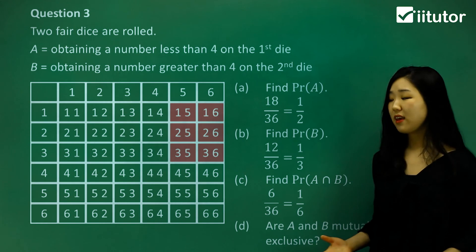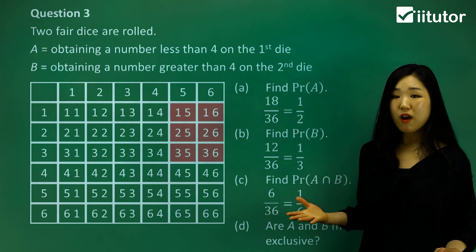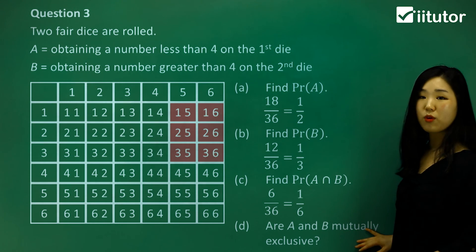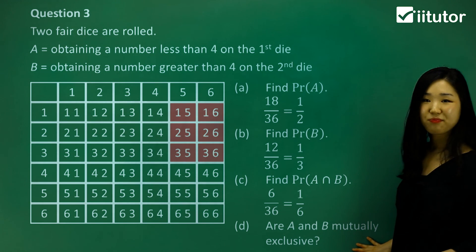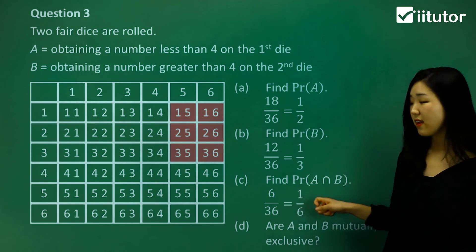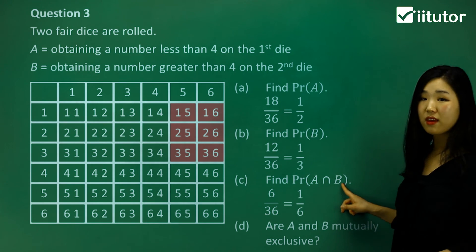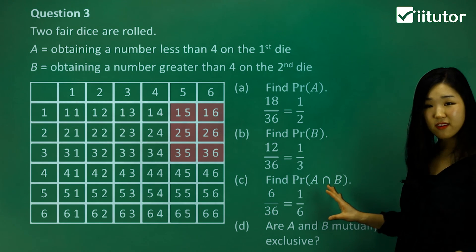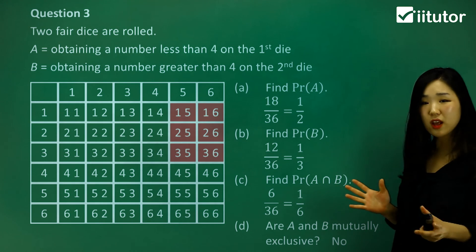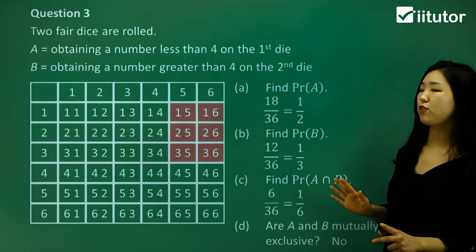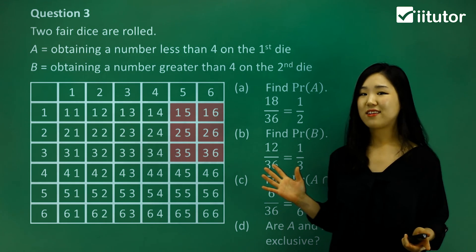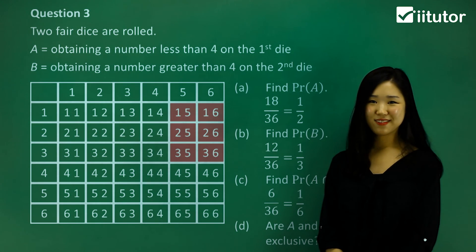Part D finally asks: are events A and B mutually exclusive? Well, they do have common parts — the probability of A and B exists and is not zero. Therefore, no, they cannot be mutually exclusive. If there are any common parts at all, they are not mutually exclusive. That's the idea of mutually exclusive events.